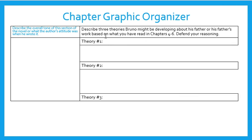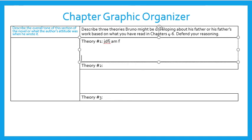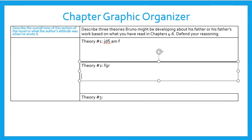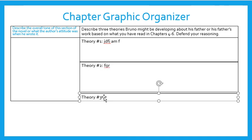The last one is another graphic organizer. You're going to describe three theories Bruno might be developing about his father or his father's work based on what you've read in chapters 4 through 6, and defend your reasoning. You're just going to click and type. Your theory does not have to be that big. Then go to the next one and type, and then you can go to the next one and type.